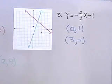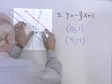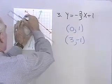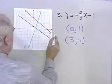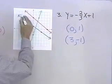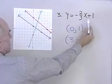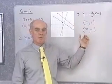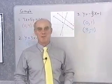If I connect those 2 points with a straight line, I'll end up with the graph of this line, y is equal to negative 2 thirds x plus 1. So to graph straight lines, we'll find 2 or 3 points on the line, plot those points, and then draw a line between them.